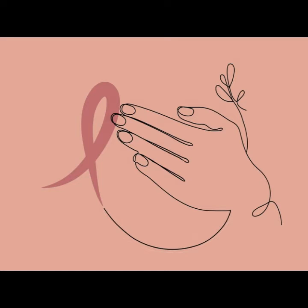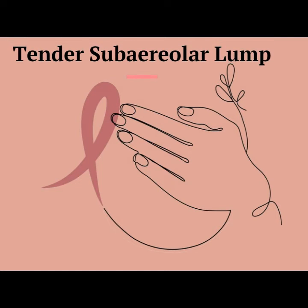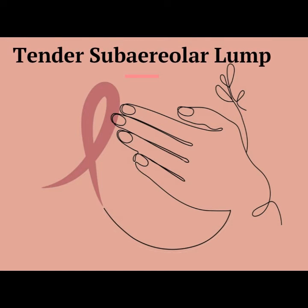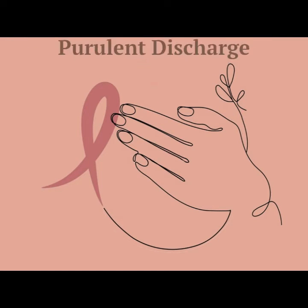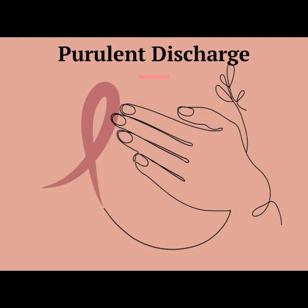The examination reveals a tender, firm subareolar lump or abscess, purulent nipple discharge, thickened tender major milk ducts, and a transverse slit-like nipple retraction looking like a fish mouth.